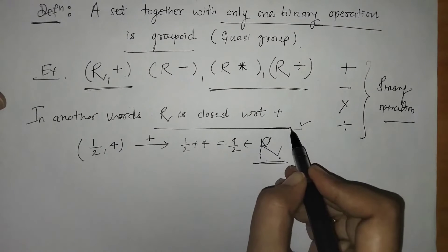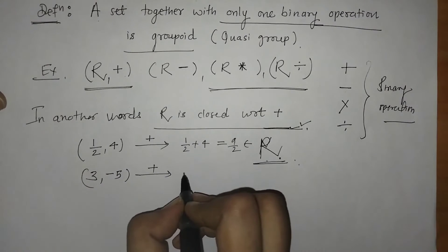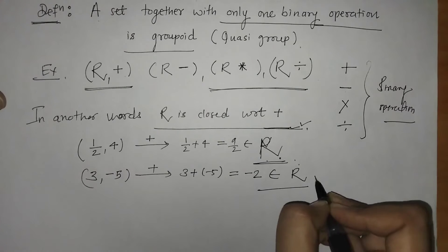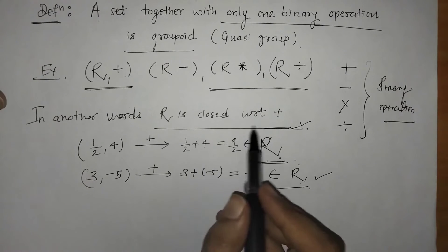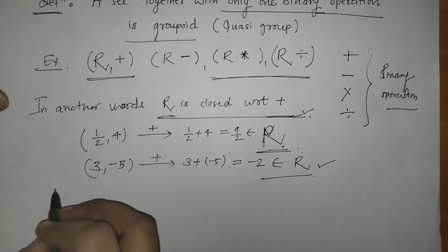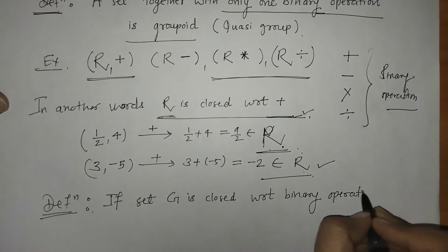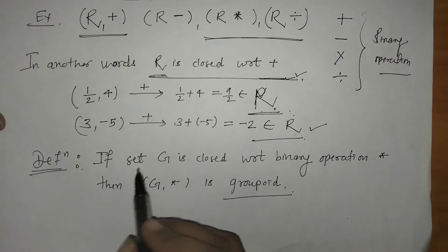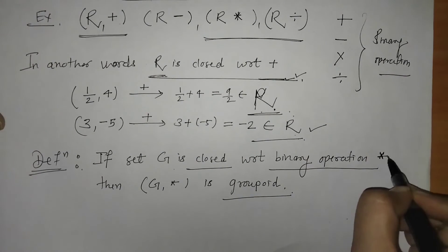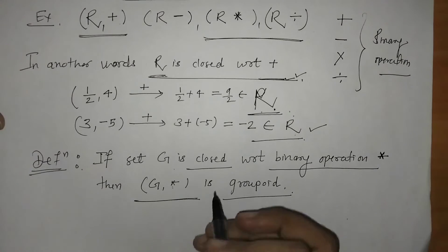If we have 3 and minus 5 and operate addition, we get minus 2, which is again a real number belonging to the set of real numbers. That means set R is closed with respect to the addition operation. So for groupoid, we can define in another way: if set G is closed with respect to a binary operation star, then the algebraic structure set G with the binary operation star is a groupoid.